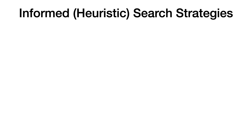Hello everyone. In the previous videos we have seen various uninformed search techniques: breadth first search, uniform cost search, depth first search, depth limited search, iterative deepening depth first search, and bidirectional search. All these algorithms are uninformed search techniques, which means that we did not have any knowledge about the problem or any extra information.